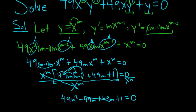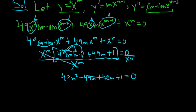These cancel. So we end up with 49m squared plus 1, and that's equal to 0.